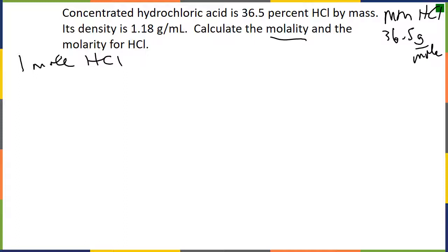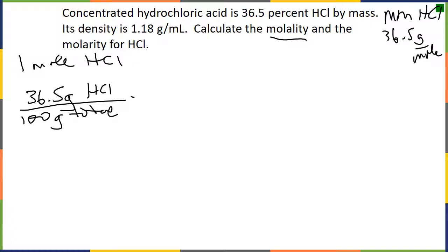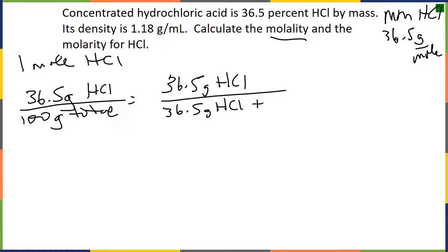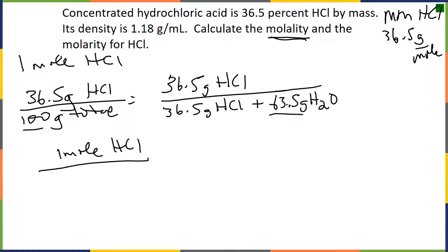We need moles for both molality and molarity. We have 36.5 g of HCl over 100 g total solution, which is 36.5 g HCl plus 63.5 g water. Solute and solvent must add up to 100. For molality: 1 mol HCl divided by the mass of solvent (water) = 0.0635 kg gives a molality of 15.7 m.